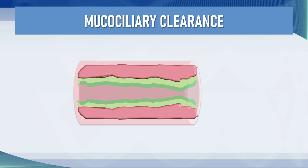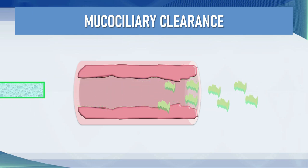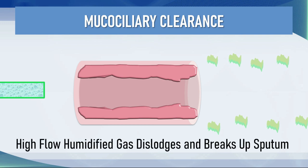Regarding mucociliary clearance — there is gunk lining the airway that increases airway resistance and work of breathing. It is widely believed that this high flow of humidified gas essentially reefs this material off the airway, increases breakdown of sputum because it is saturated and running at such high flow, dislodges secretions so patients can cough them up and clear the airway — reducing work of breathing.